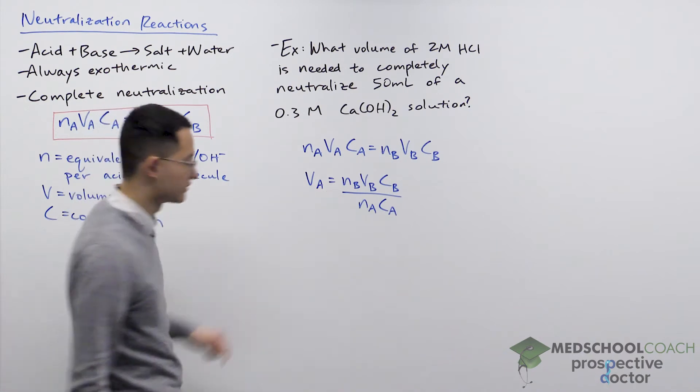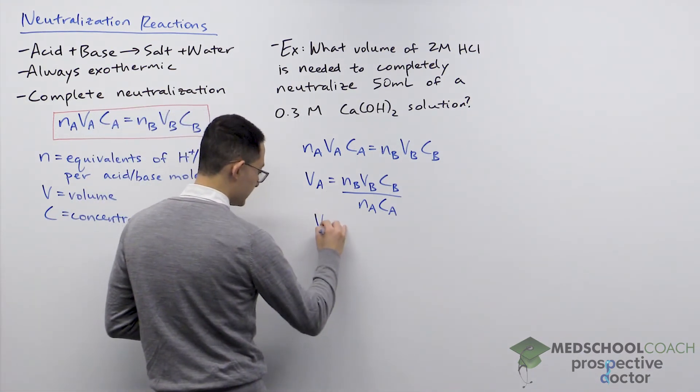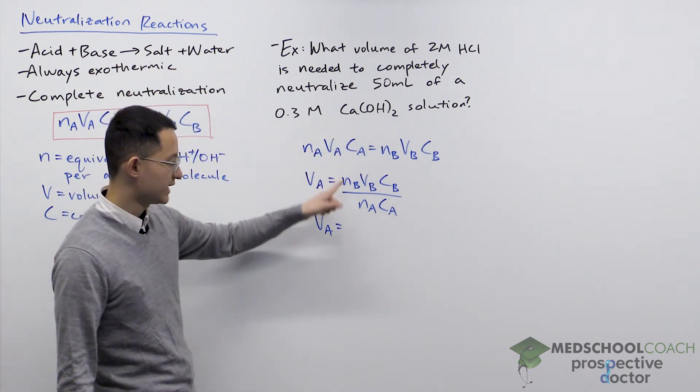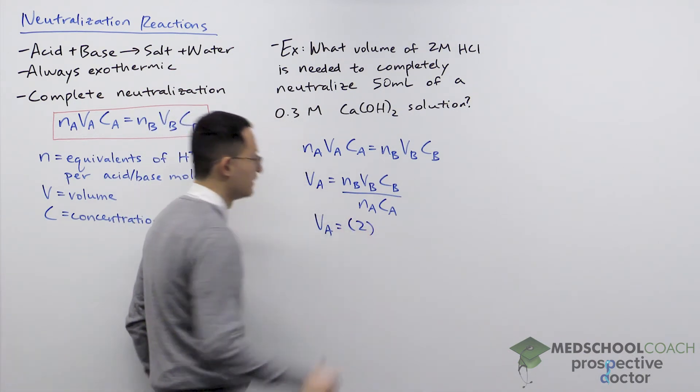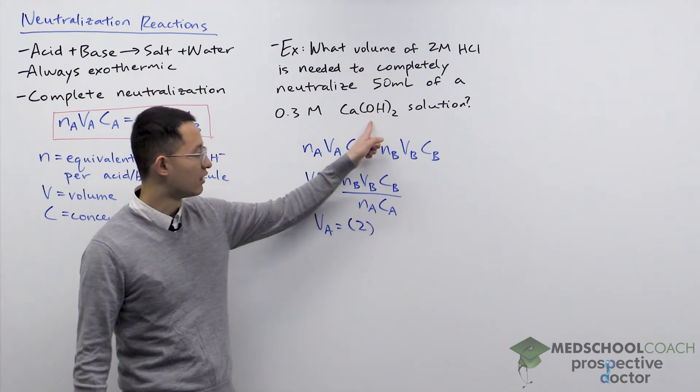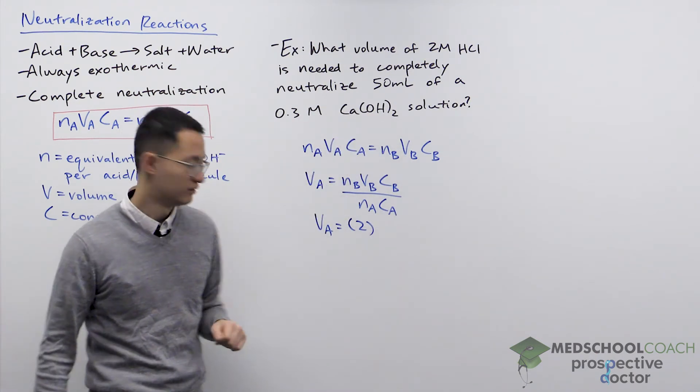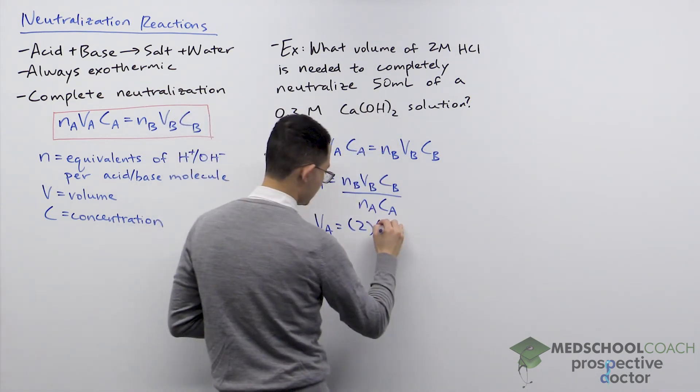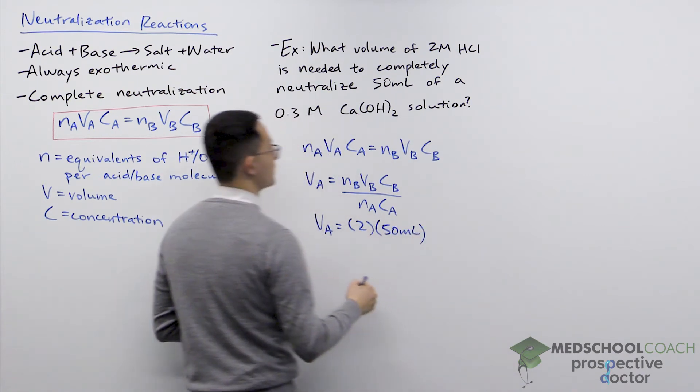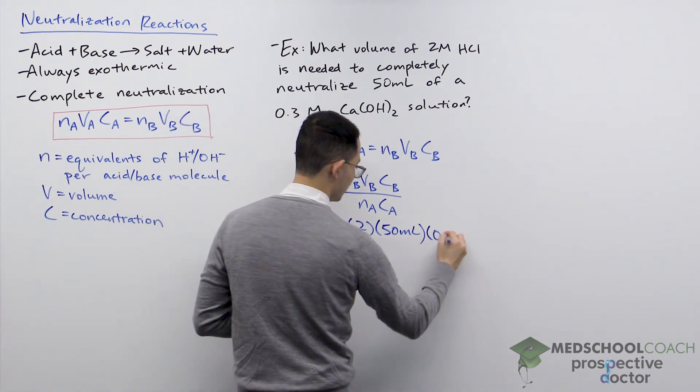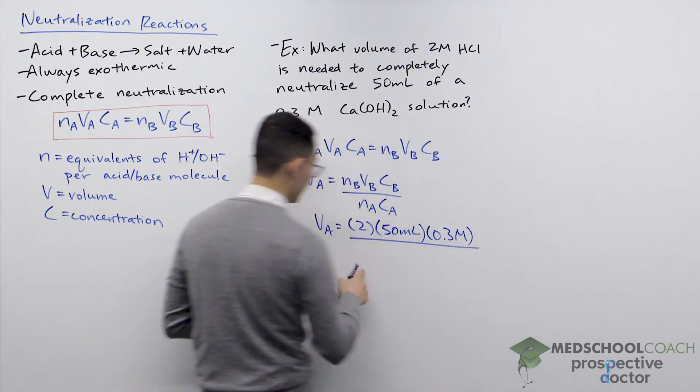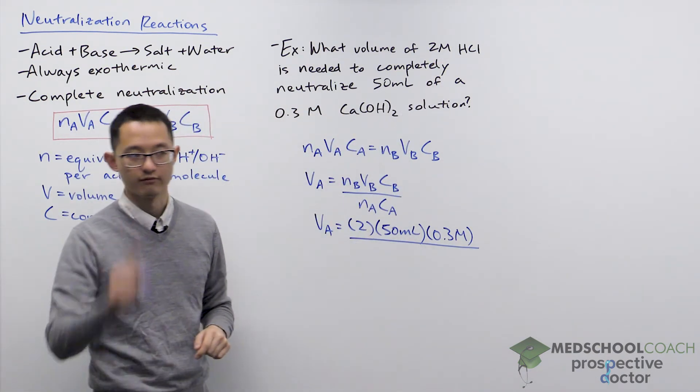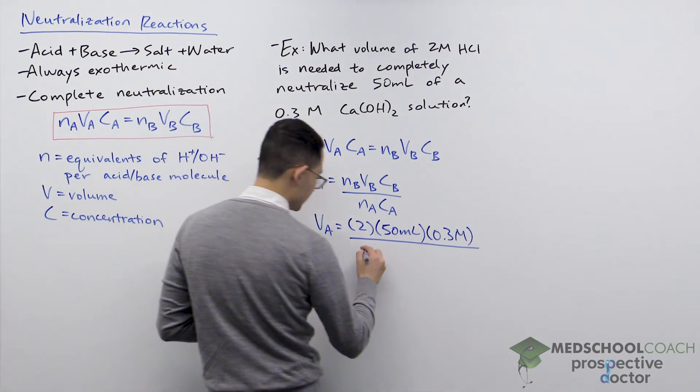Now we can start plugging in some of these values. Nᵦ, this is the equivalence for the calcium hydroxide solution. In this case, Nᵦ is going to be equal to 2 because we have two hydroxide molecules per calcium hydroxide molecule. Volume of the base, they told us we have 50 milliliters of the calcium hydroxide. Concentration of the base, they tell us it's 0.3 molar. And this is going to be divided by Nₐ, the equivalence for HCl. We said for each HCl molecule, we have one hydrogen ion, so Nₐ is going to be equal to 1.